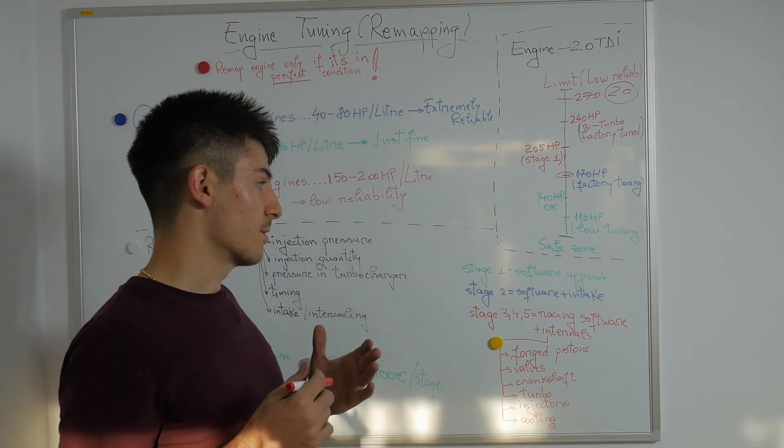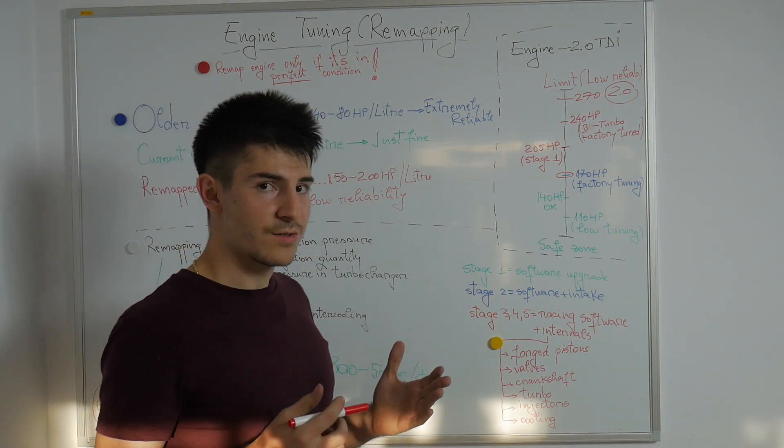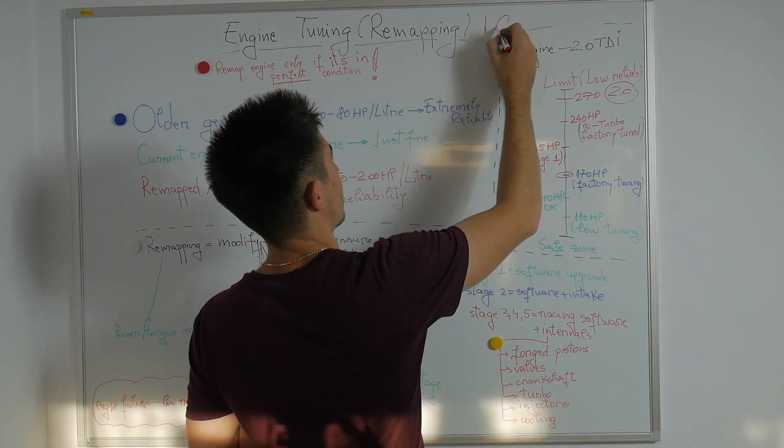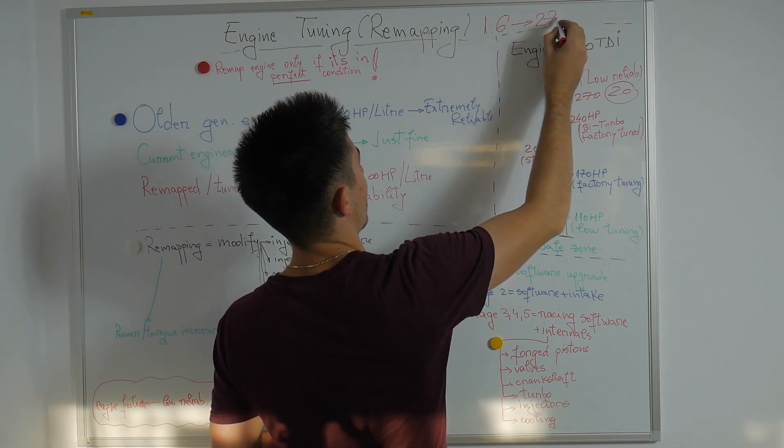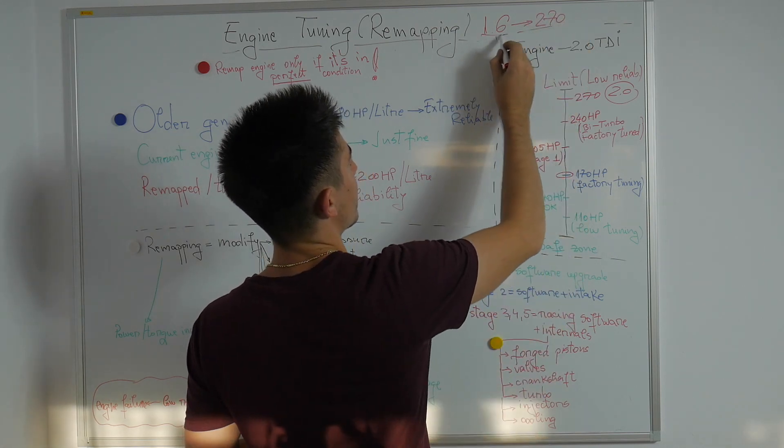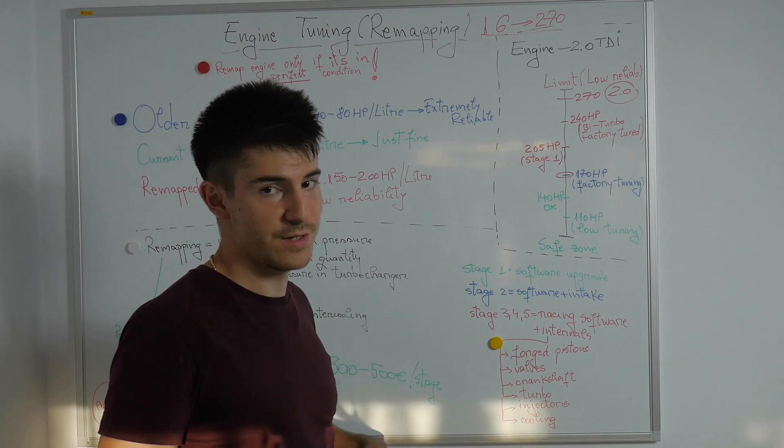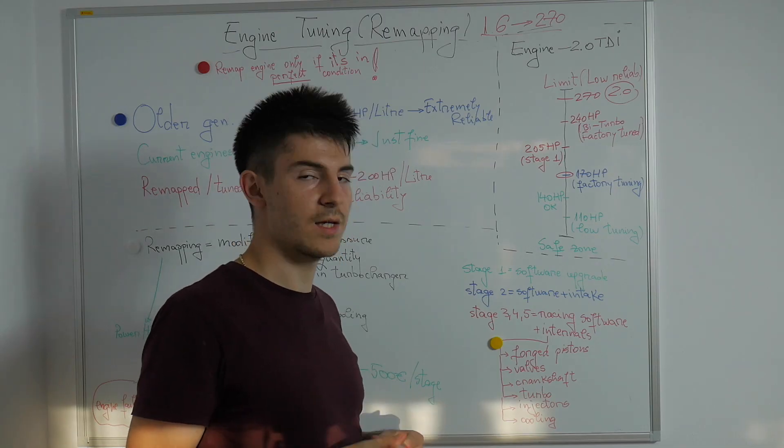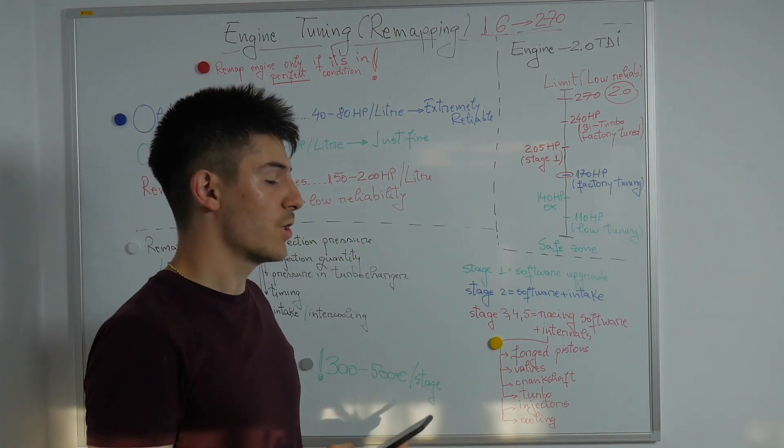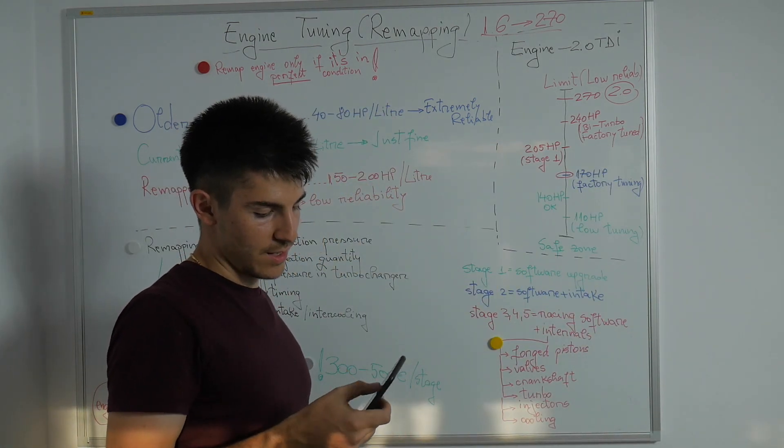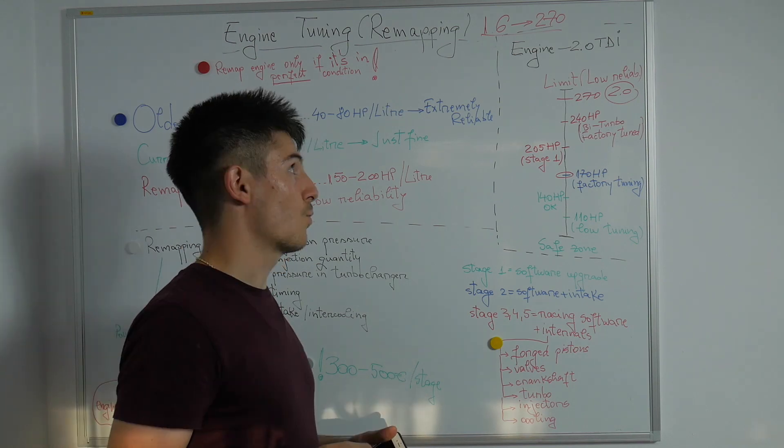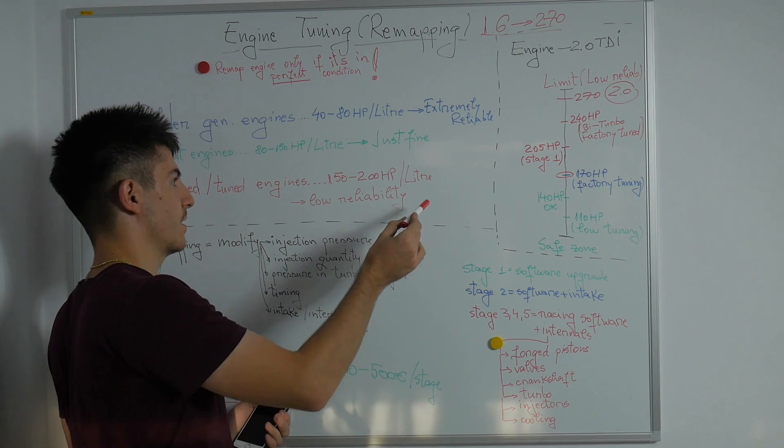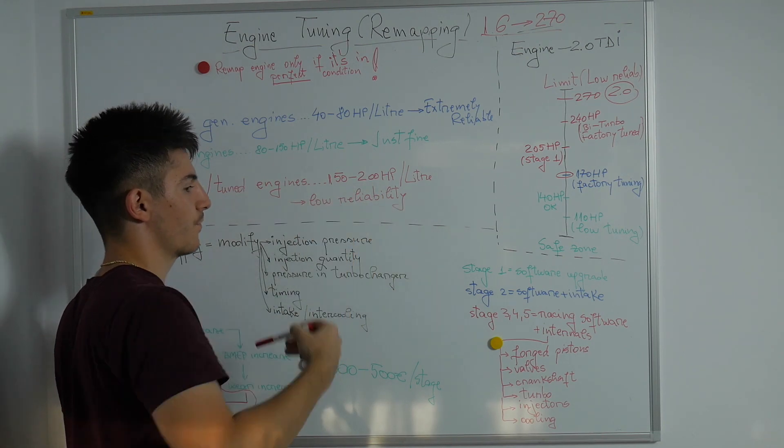In a gasoline engine, there are literally cars out there which have a 1.6 turbocharged engine which have 270 horsepower. You can find this engine in the Peugeot RCZ or recently the Peugeot 308. 270 horsepower divided by 1.6 is equivalent to 168 horsepower per liter which stands in this limit.